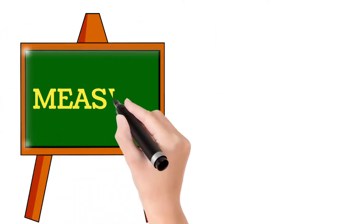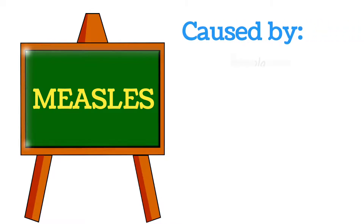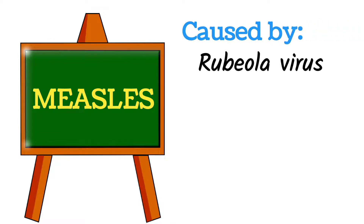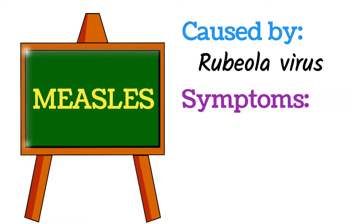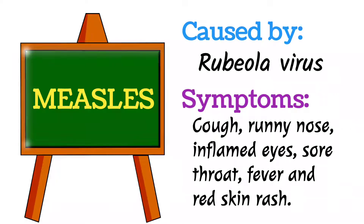Next viral disease is measles. Measles is caused by the rubeola virus and the symptoms involve coughing, runny nose, inflamed or swollen eyes, and sore throat. Due to the sore throat, the patient feels difficulty in swallowing. Other symptoms include high fever and red rashes on the skin.